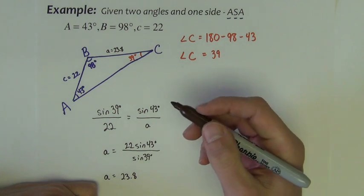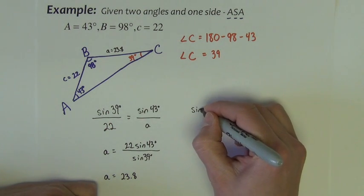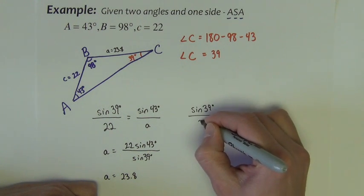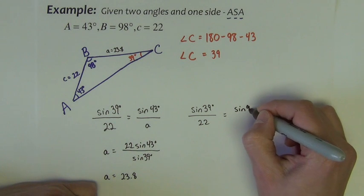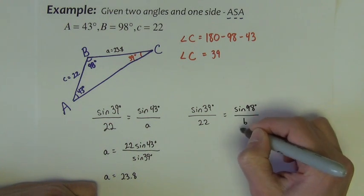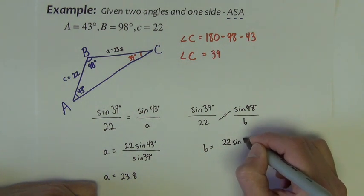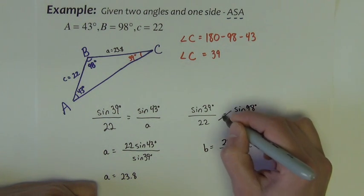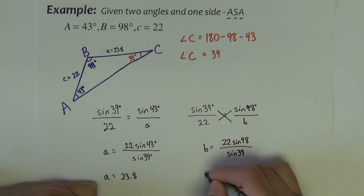Alright, now we're going to move on to little b. Again, I'm going to use sine of C over c, set equal to sine of B over little b. So again, I cross-multiply, cross-multiply involves dividing then by sine of 39. So I need 22 sine of 98 divided by sine of 39.